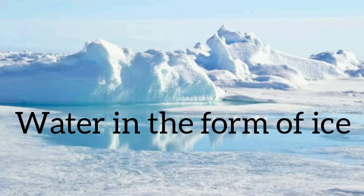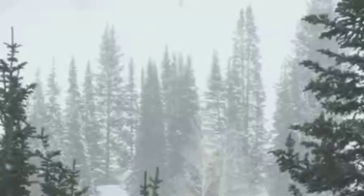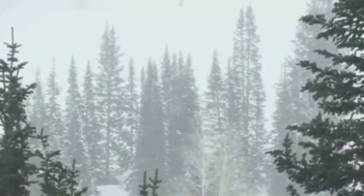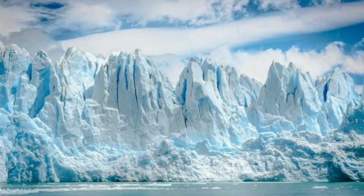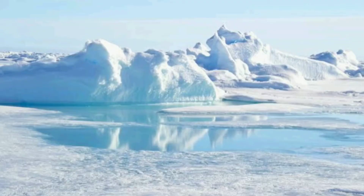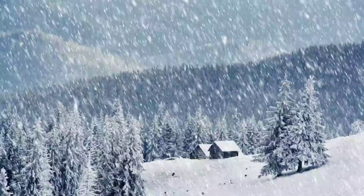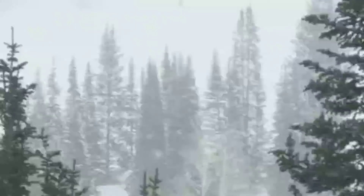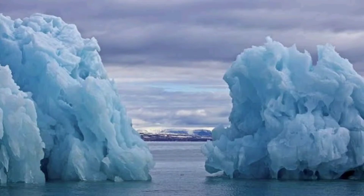Water can also exist in the form of ice. Water particles in the clouds freeze, and in cold regions they come down as snow. When layers of snow pile up on the ground, they form ice. When such layers of ice pile up in a low-lying area and become huge in size, these huge masses are called glaciers.